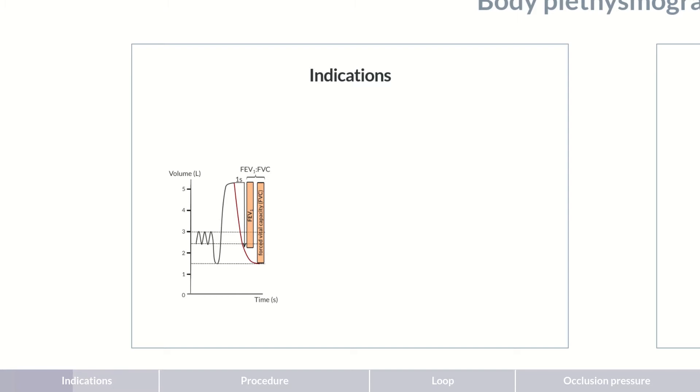And therefore, the FEV1 to FVC ratio is reduced. However, both the FEV1 and the forced vital capacity are dynamic volumes. That is, they're measured under forced expiration.